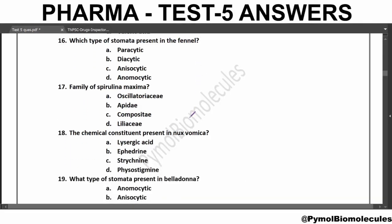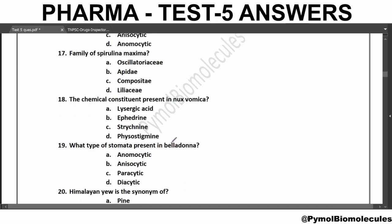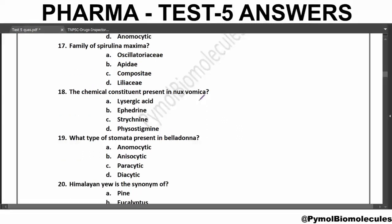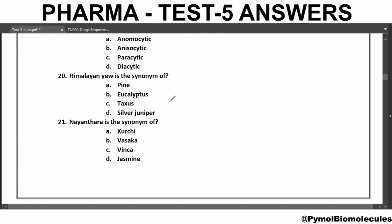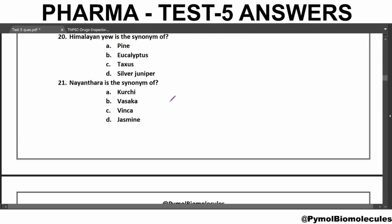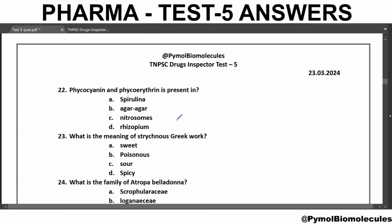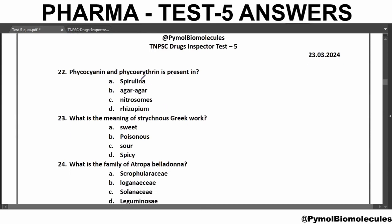Family of Spirulina maxima is Oscillatoriaceae. The chemical constituent present in Nux vomica is Strychnine, and the other chemical constituent is Brucine. What type of stomata is present in Belladonna? Belladonna contains Anisocytic stomata. Himalayan Yew is the synonym of Taxus. Naintara is the synonym of Vinca. Phycocyanin and Phycoerythrin are present in Spirulina.